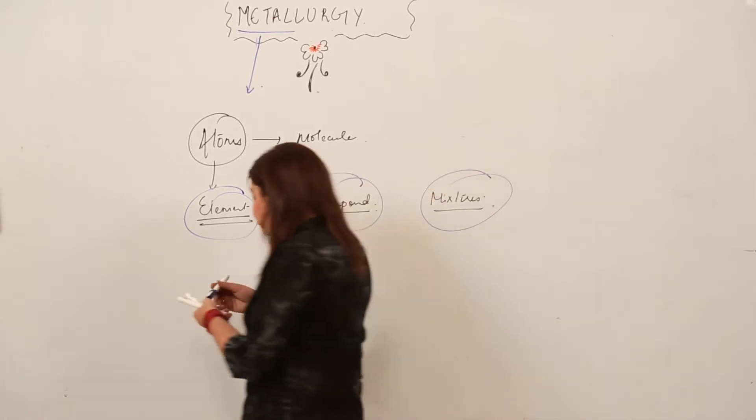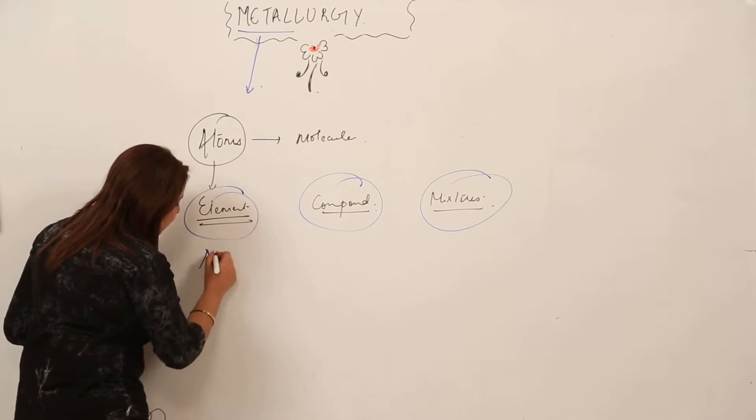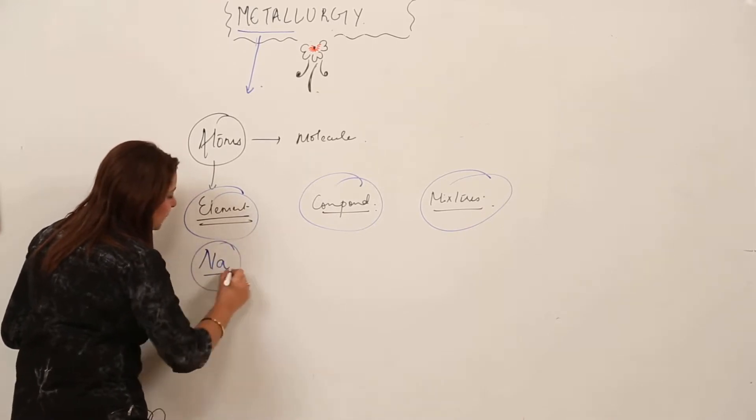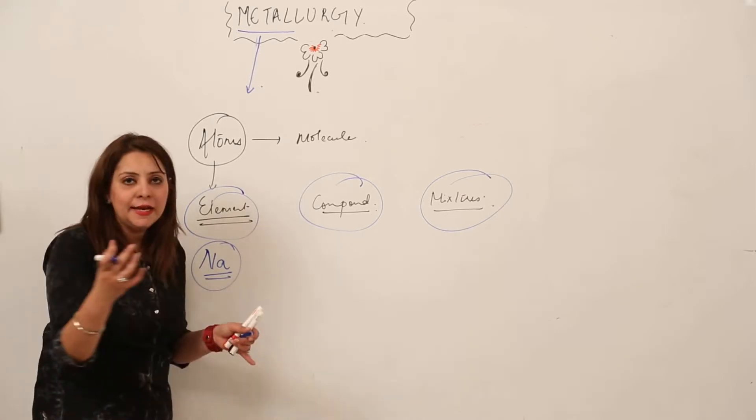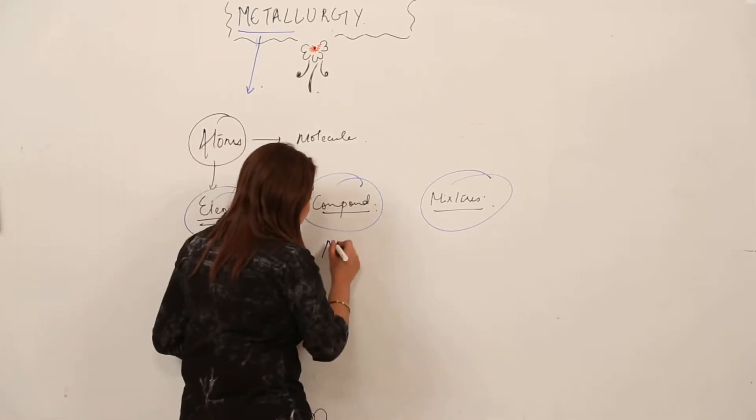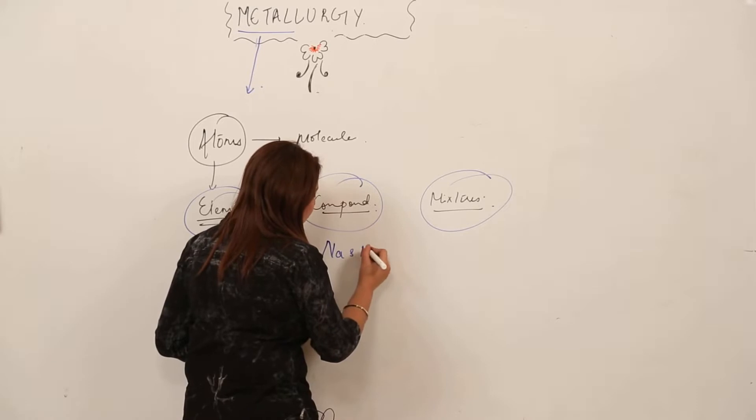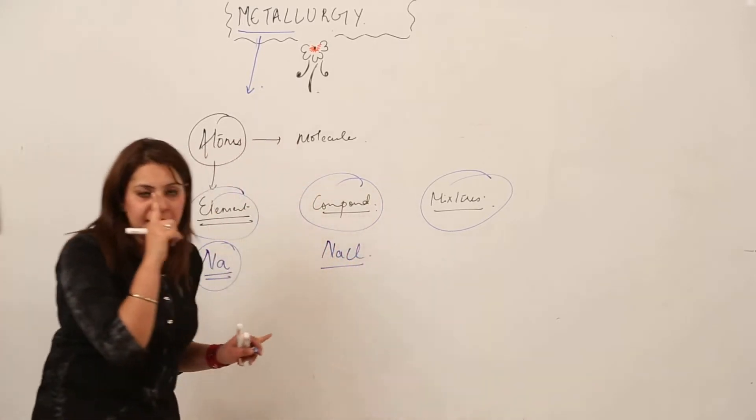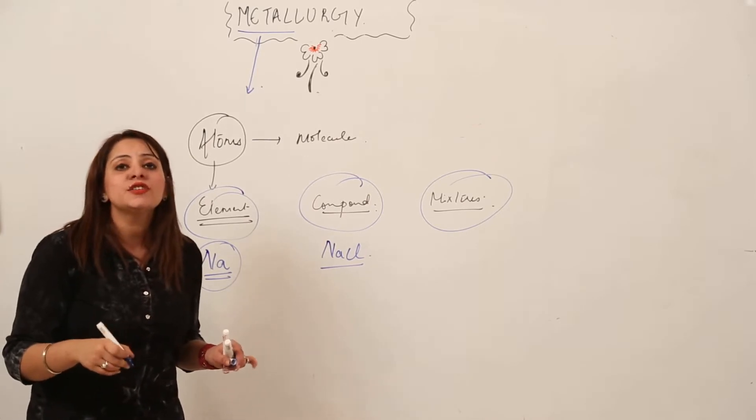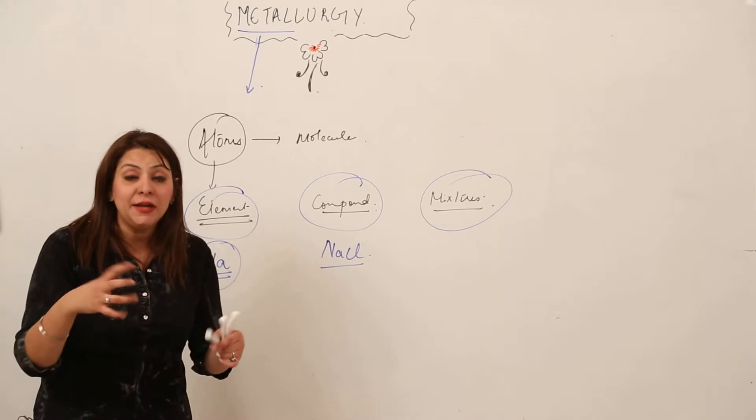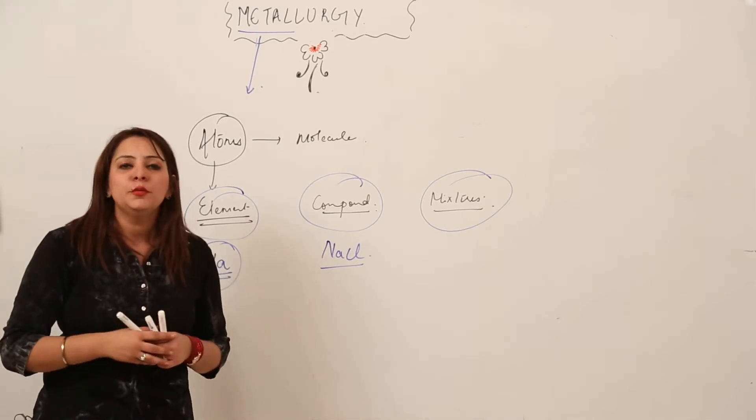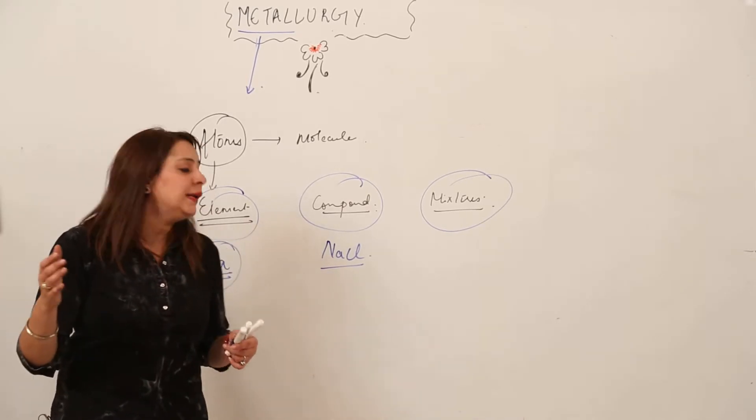I am stating an example for you. This is sodium. If I am writing like this, it means it is indicating an element. But when I write NaCl, it becomes a compound, that is sodium chloride, in which the atoms of sodium and chlorine are chemically bonded in a fixed ratio of volume and mass.